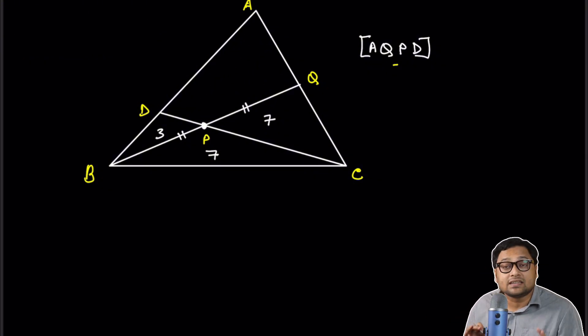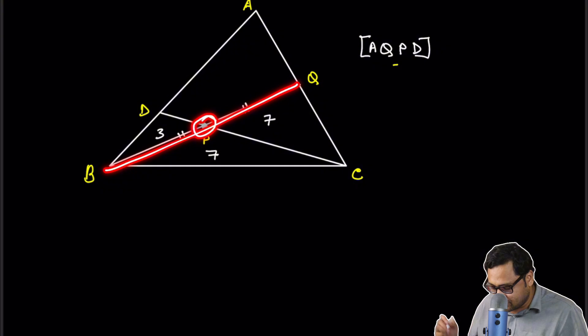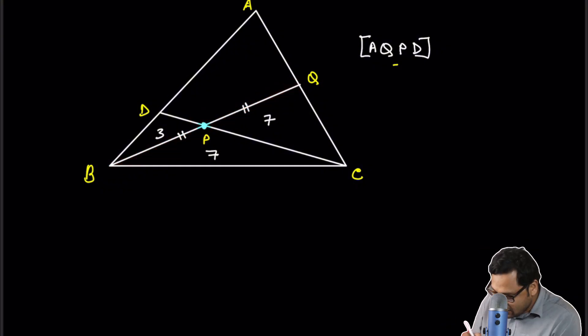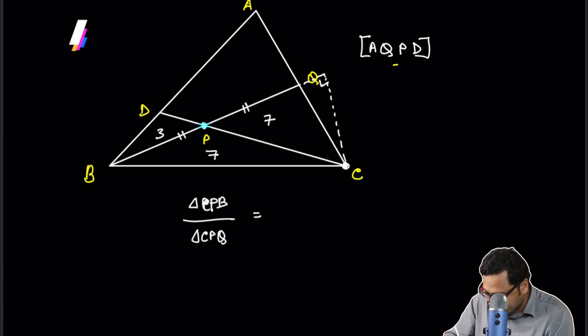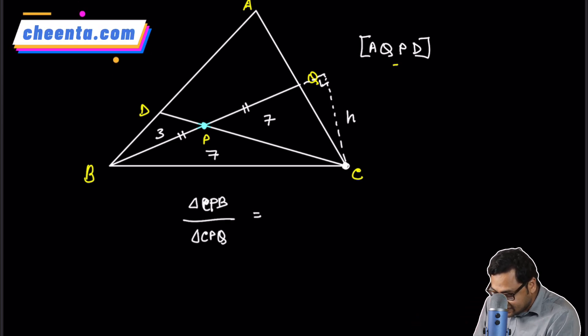We notice that this point P is actually the midpoint of BQ. Why is that? Remember CPB and CPQ, these two triangles, they have the same height. You can actually draw the height if you want. You have to extend this line. You can probably draw the height. This is the height H. They have the same height.